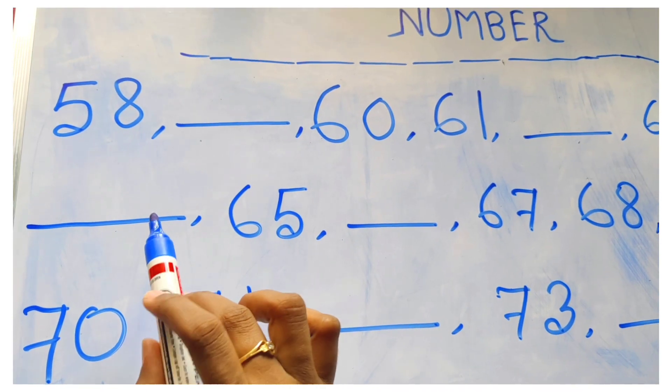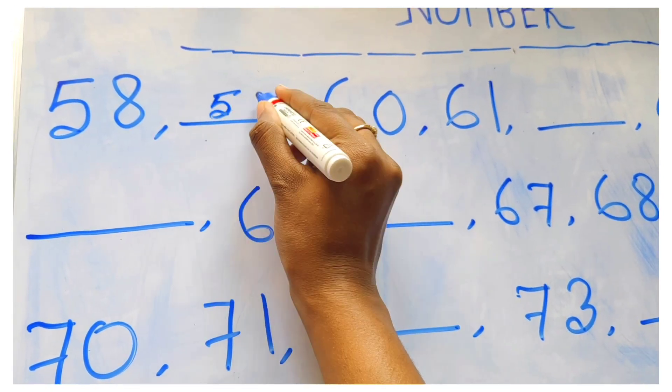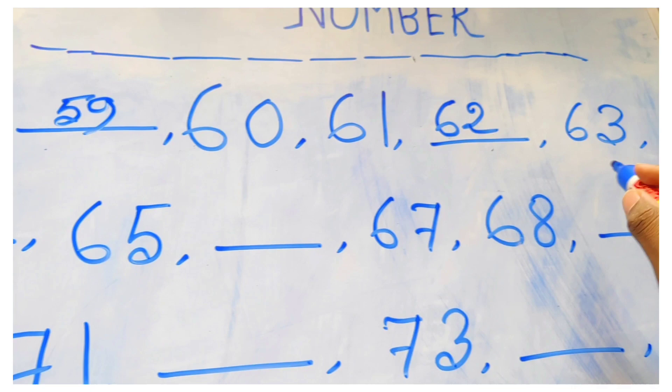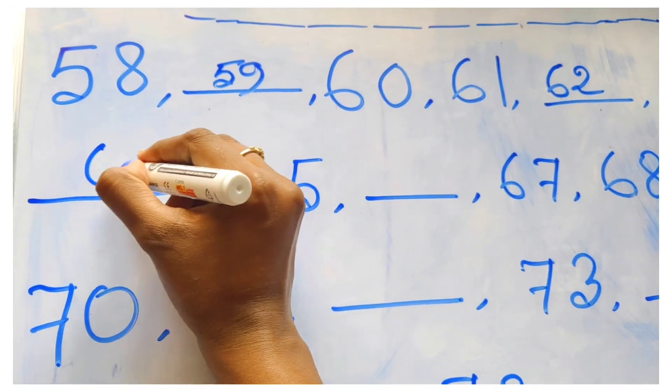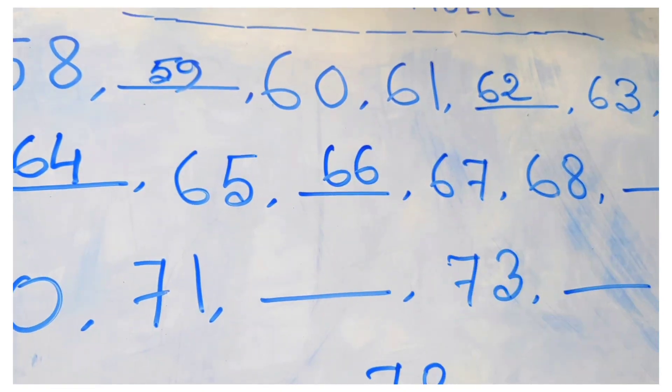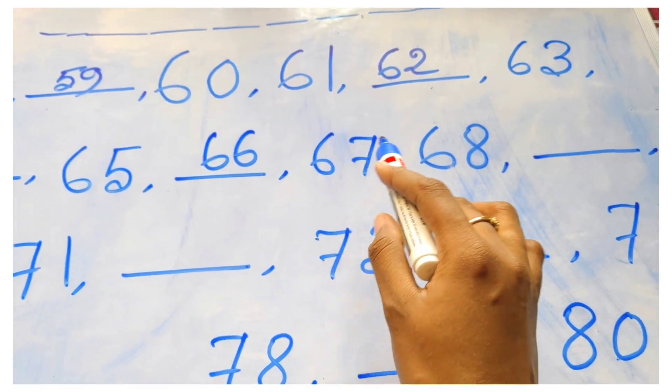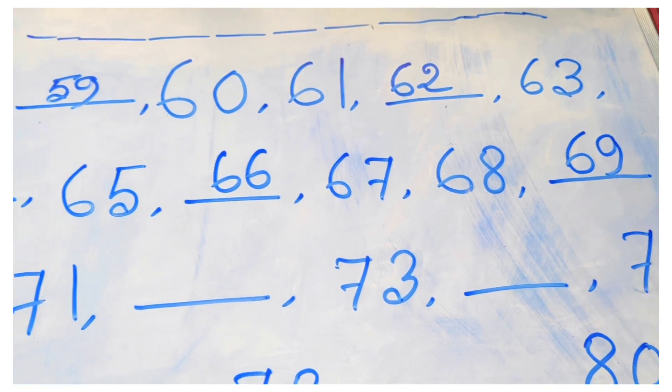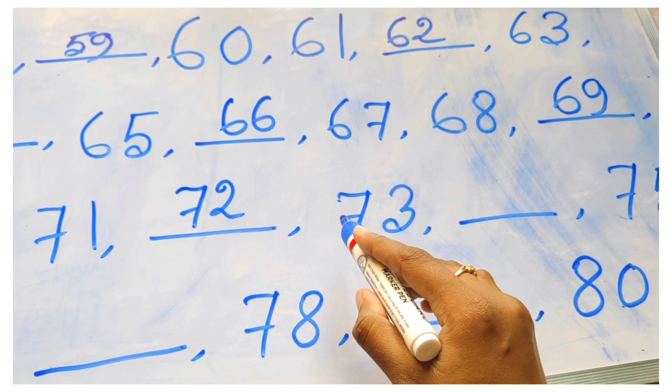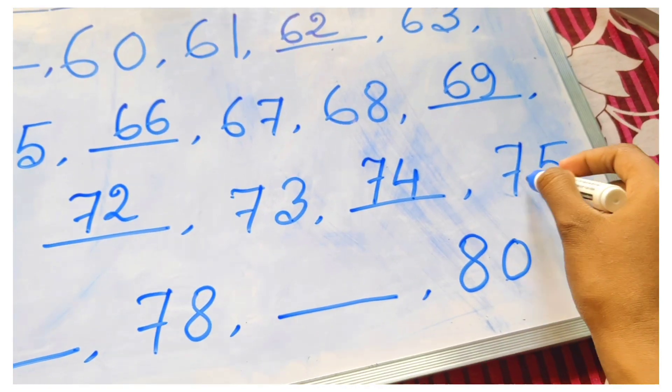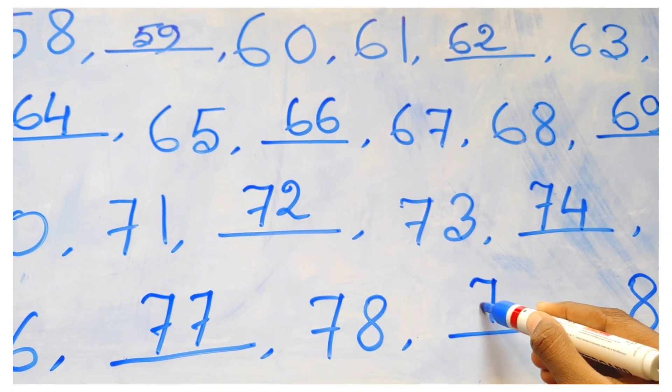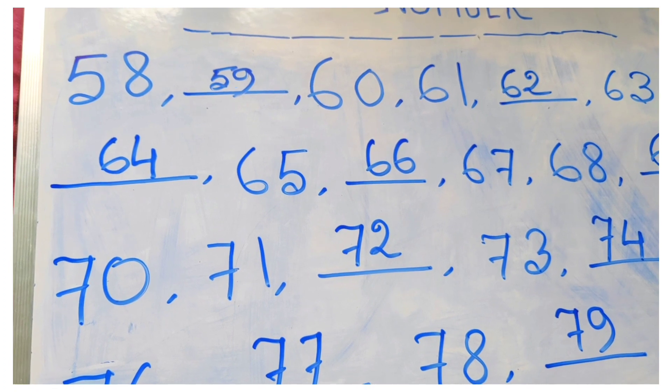Next is 58, then 59, 60, 61, here, 62, very good. Next, 63, here, 64, good. Then 65, here, 66, good. Next, 67, 68, 69, then 70, 71, 72, 73, 74, 75, 76, 77, 78, 79, 80. Repeat once more.